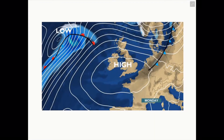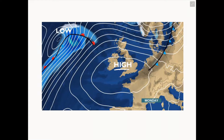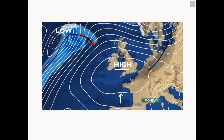A more commonly seen synoptic chart are those used by the BBC and ITV News. This particular example shows we are experiencing an anticyclone due to the 'HIGH' that is indicated and labelled in the centre of this synoptic chart, as well as the isobars being widely distributed between one another.